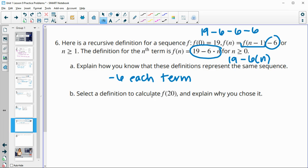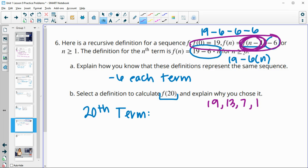And then select a definition and calculate f of 20. So calculate the 20th term. And then why did you choose the one you chose? Well, if I do the recursive formula, so if I do this, I'm going to have to subtract it 19 times. I'm going to have to sit here and write out 19 minus 6, which is 13. Take 13 minus 6, which is 7. Take 7 minus 6, which is 1. And keep going because I need the previous term.